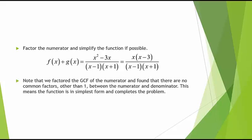Next, we have to try to factor the numerator and simplify the function if possible. f(x) plus g(x) equals x squared minus 3x, divided by x minus 1 times x plus 1. We factor the numerator by taking the GCF of x out of x squared minus 3x. So the numerator becomes x times x minus 3, and the denominator remains the same. We see that there are no common factors between the numerator and denominator, so the function is now in its simplest form, and we have completed the problem.